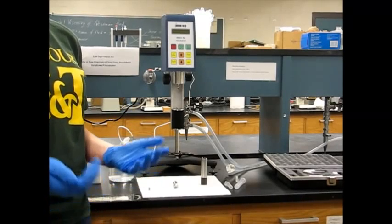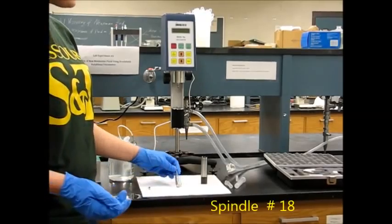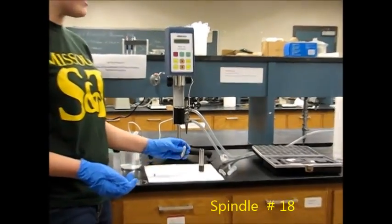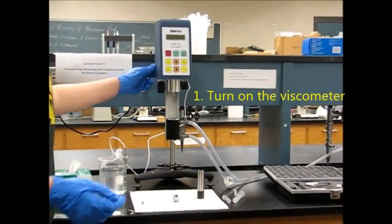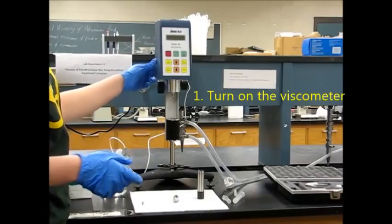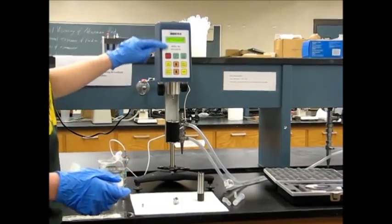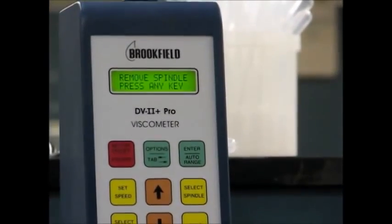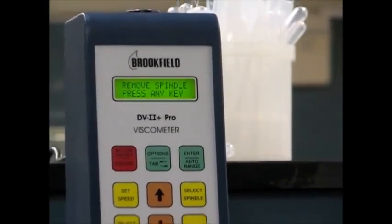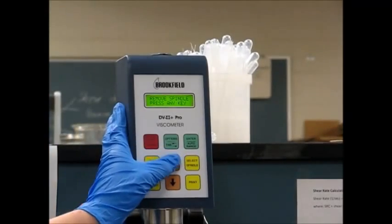For the purposes of this experiment, we're going to use spindle number 18. It has an 18 on its stem. The first thing that we're going to do is turn on the viscometer with the on-off switch on the back of it. We're going to follow the directions on this keypad. It tells us to remove the spindle. We don't have the spindle attached, and then it says press any key.